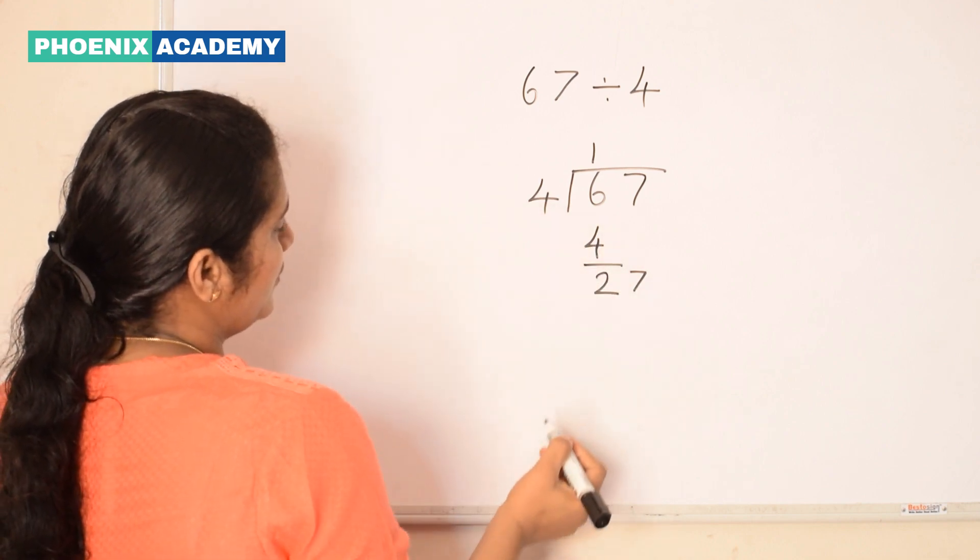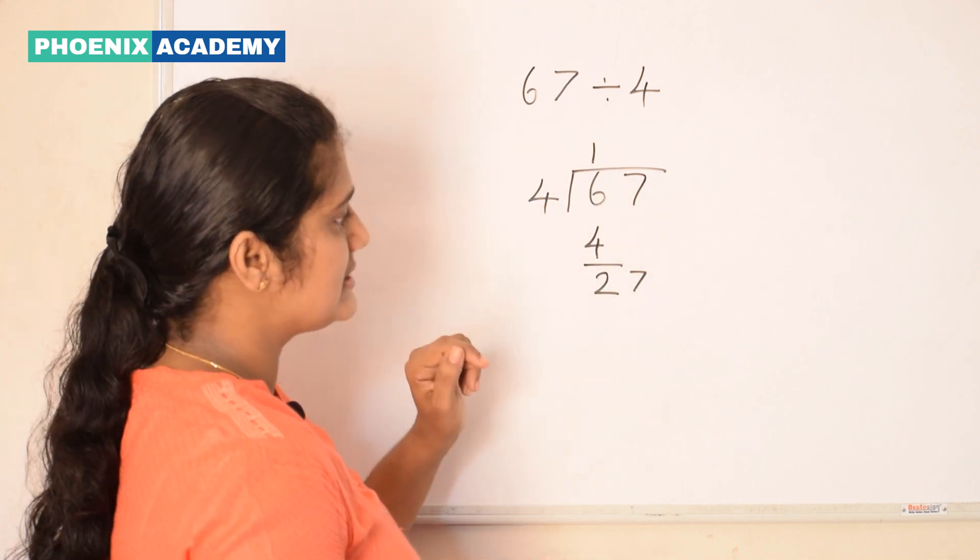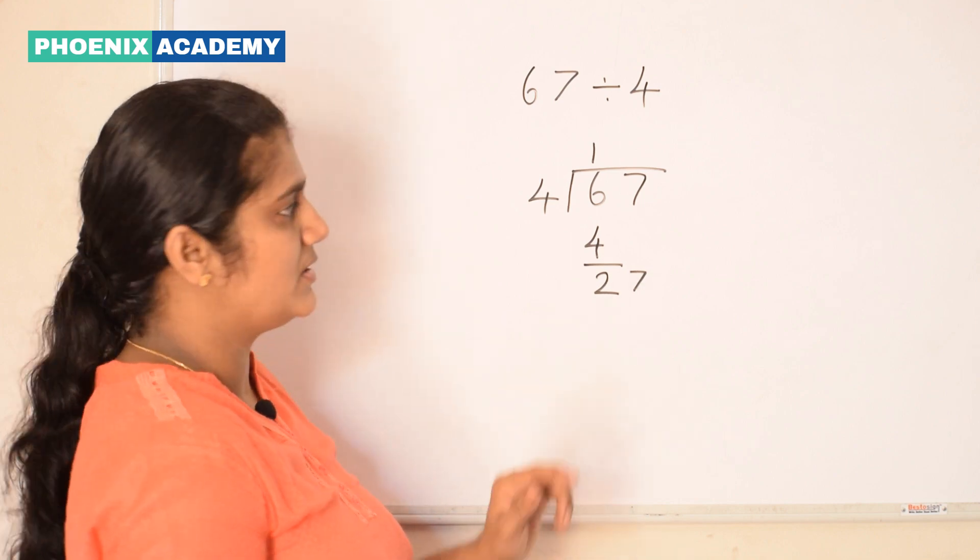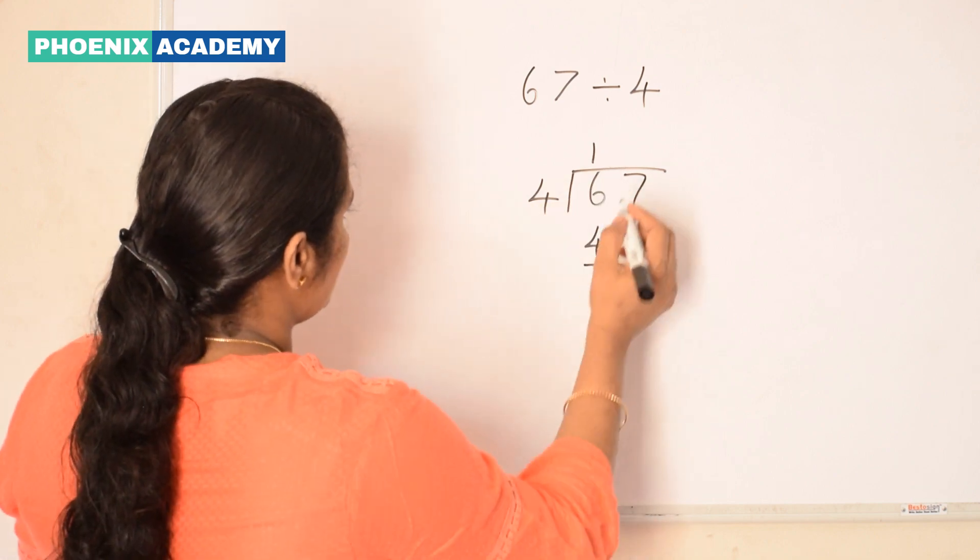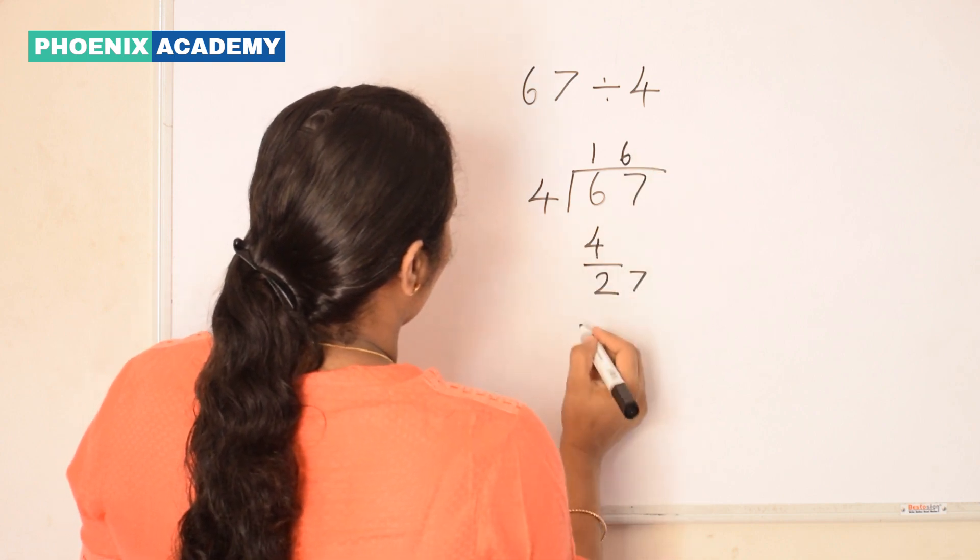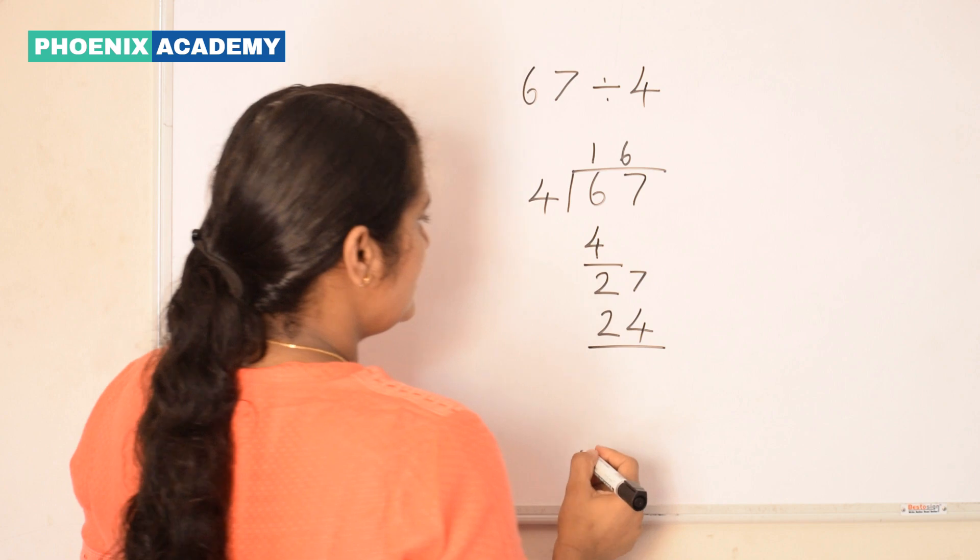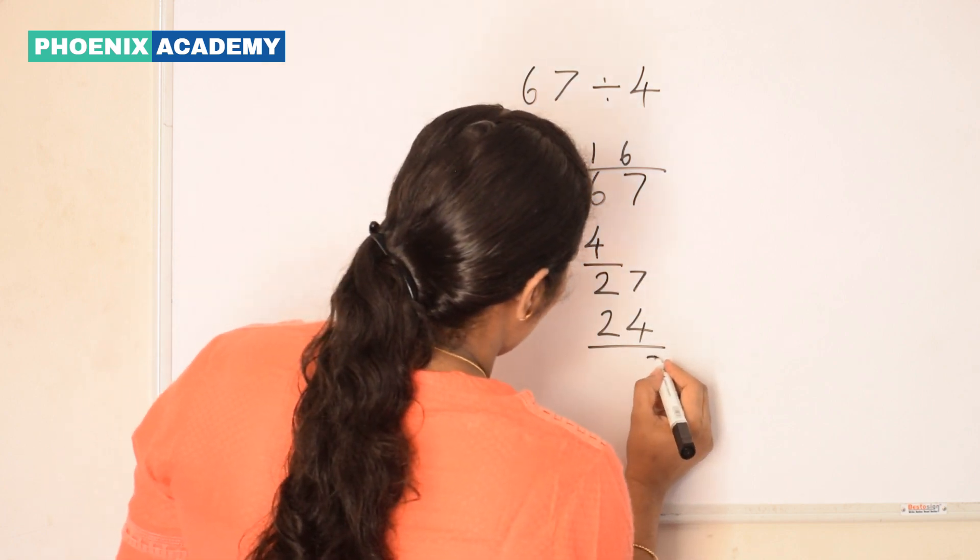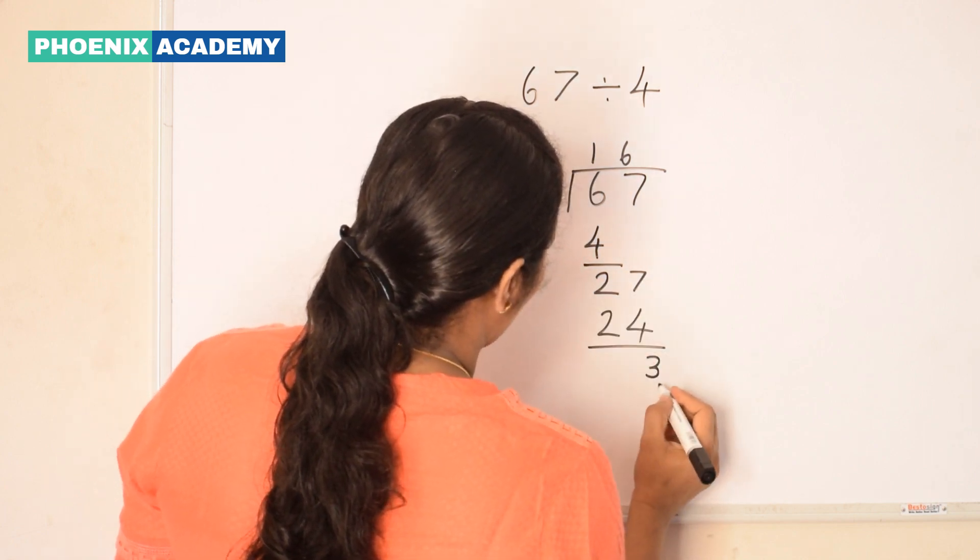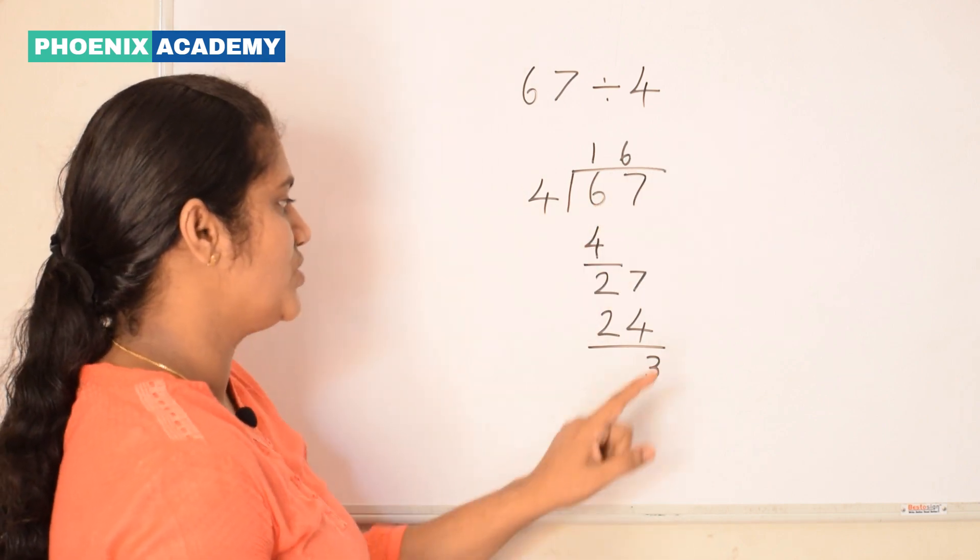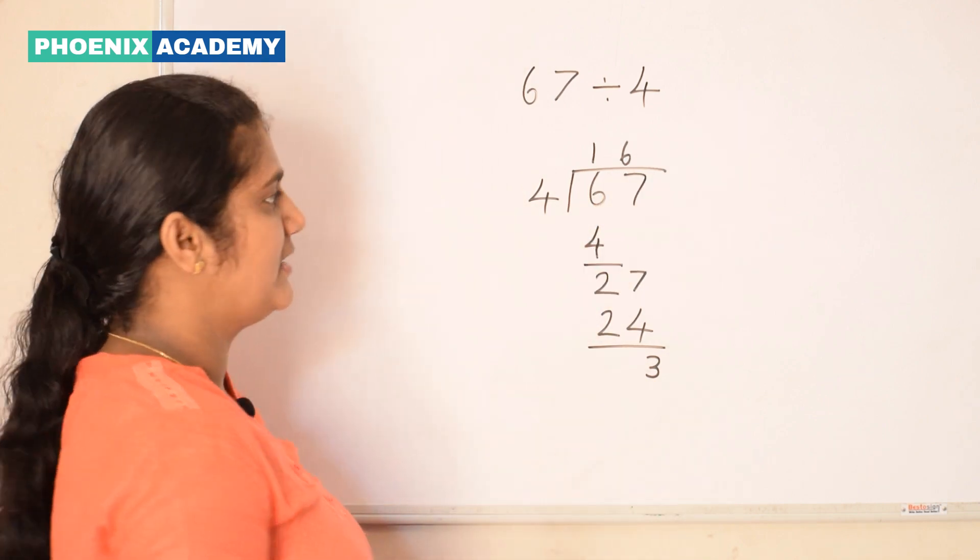27 divided by 4. 4 sixes are 24. 4 sevens are 28. So we take 6. Then subtract. 7 minus 4 is 3. 2 minus 2 is 0. Here we get 16 as the quotient and 3 as the remainder.